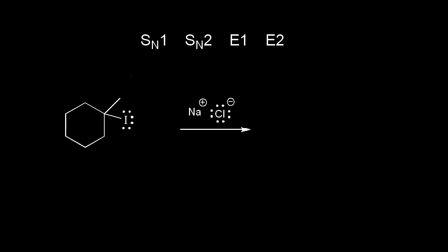Let's look at elimination versus substitution for a tertiary substrate. We have a tertiary alkyl halide, which will form a tertiary carbocation — a stable carbocation — therefore an SN1 reaction is possible. An SN2 reaction is not possible because this tertiary alkyl halide has too much steric hindrance. An E1 mechanism is also possible because it requires a stable carbocation, and an E2 reaction is also possible. So we have three choices for a tertiary substrate.